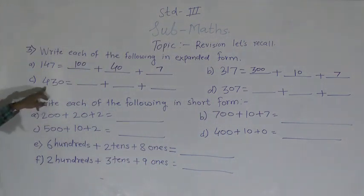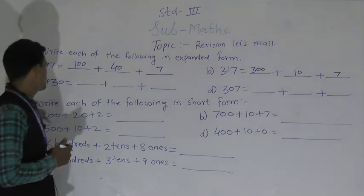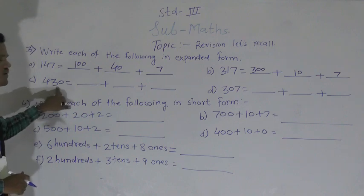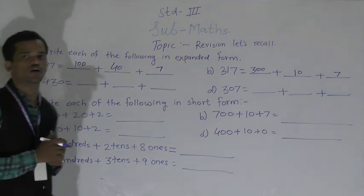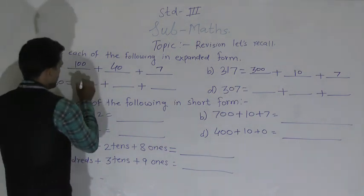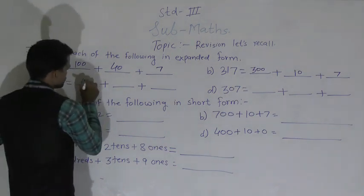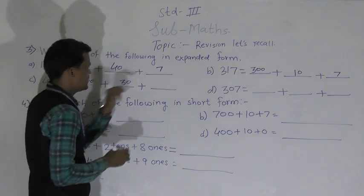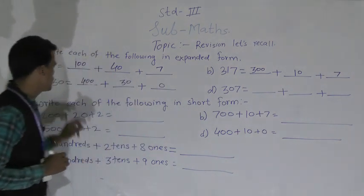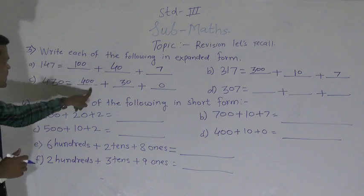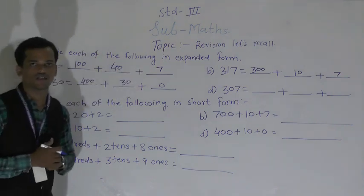Next number: 430. 4 comes at the hundreds place, 3 comes at the tens place, and 0 comes at the ones place. So 430 = 400 + 30 + 0. This is the expanded form of this given number.